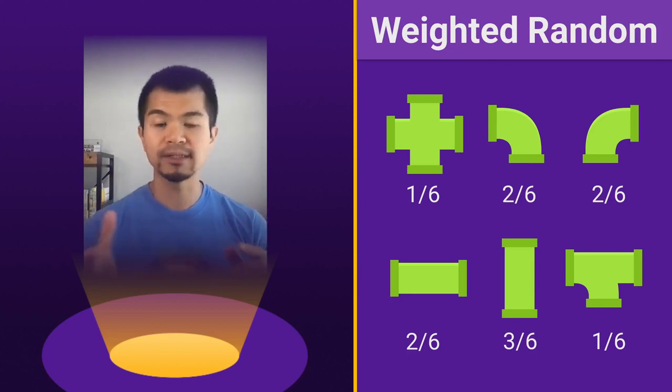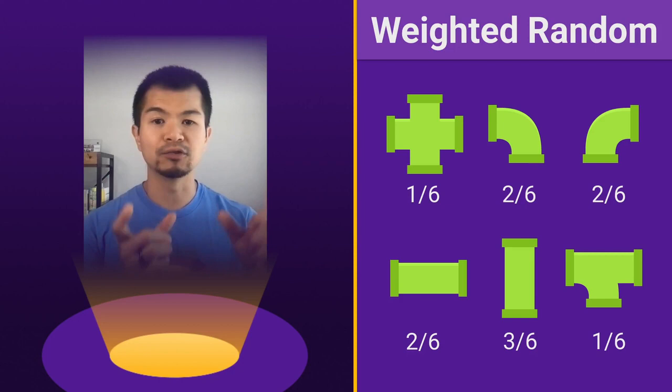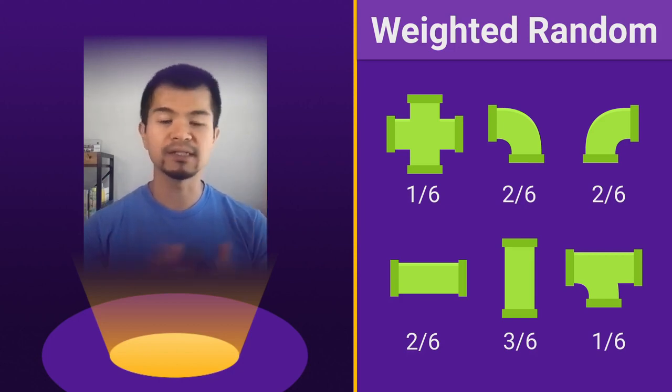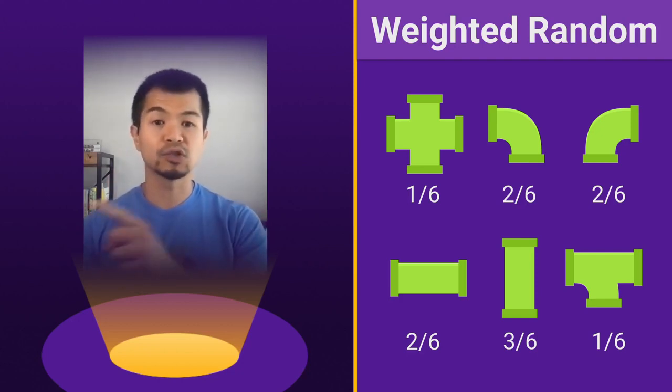And the other ones, the corners, two out of six, that's one third or 33 percent. And the tri pipe over there is also one out of six. So what basically this means is you're going to get the corner pipes two times as likely as the cross pipe. And you're going to get the straight vertical pipe 33 percent more likely than the straight horizontal pipe and three times more likely than the cross pipe. So how do we actually do that?